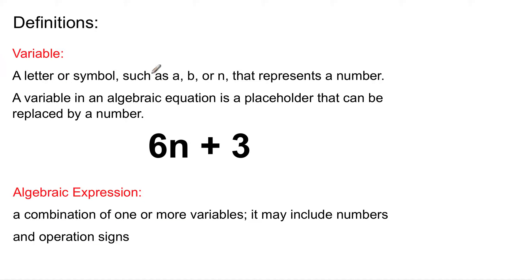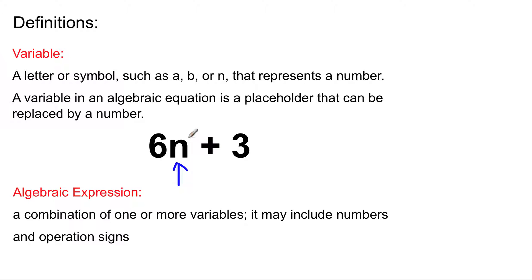Here are some definitions. A variable is a letter or symbol — such as A, B, or N — that represents a number. A variable in an algebraic equation is a placeholder that can be replaced by a number. In this case, it is N. This can be replaced with 7, 10, 2, 3, 17 million — it doesn't matter. It's just a placeholder for that number.